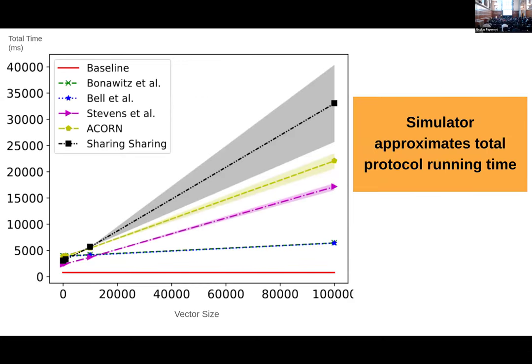The simulator is designed to produce graphs like this one. It approximates things like total protocol running time as if it ran with a server and a whole bunch of clients. On the x-axis is the size of the vector being aggregated; on the y-axis is total time; and the different colored lines are different protocols. A lot of these protocols have pretty similar asymptotics, and you can see they're all roughly linear in the size of the vector, but there are gaps between them, especially as vectors get bigger — the constants really start to matter — and you can build graphs like this that show how they matter.